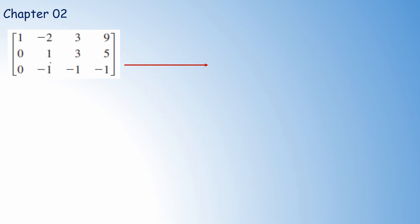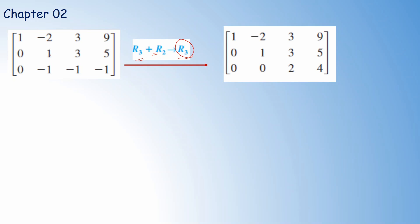We have completed the first column — all entries below the leading 1 are 0. Now we move to the second column: we keep the 1 and make all entries below it 0. We multiply the second row by 1 and add into the third row to get a new third row: 1 plus minus 1 is 0; 3 plus minus 1 is 2; and 5 plus minus 1 is 4. This is the matrix obtained after changing the third row.